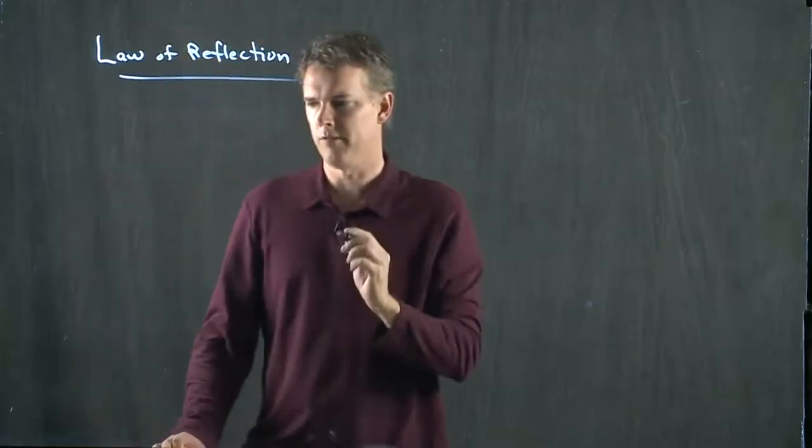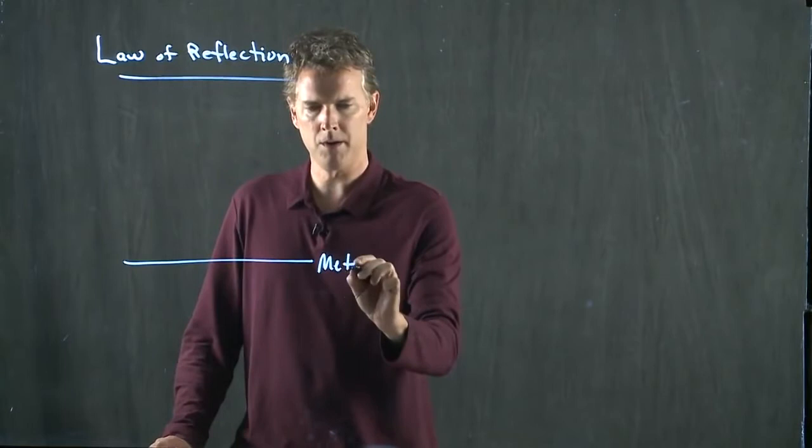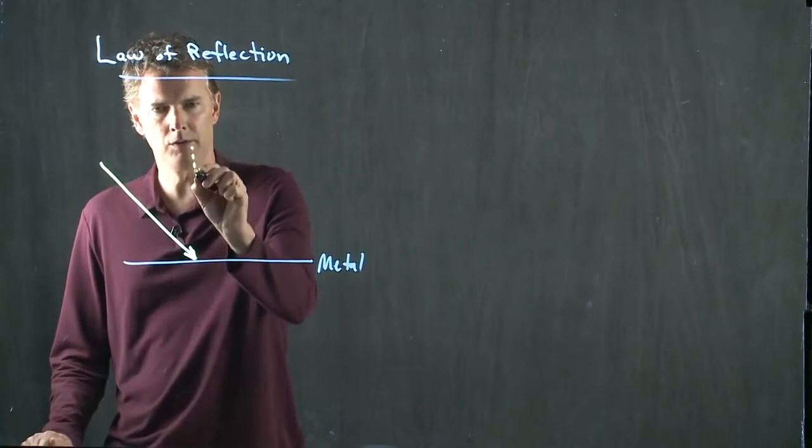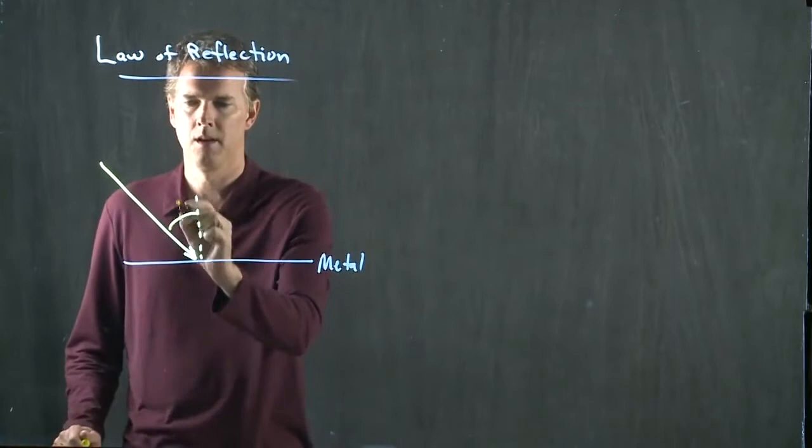Let's say we have a mirror made up of shiny metal, and a ray coming in at some particular angle. When we draw these angles, we always draw them relative to the surface normal. That incident angle, we call it theta I.